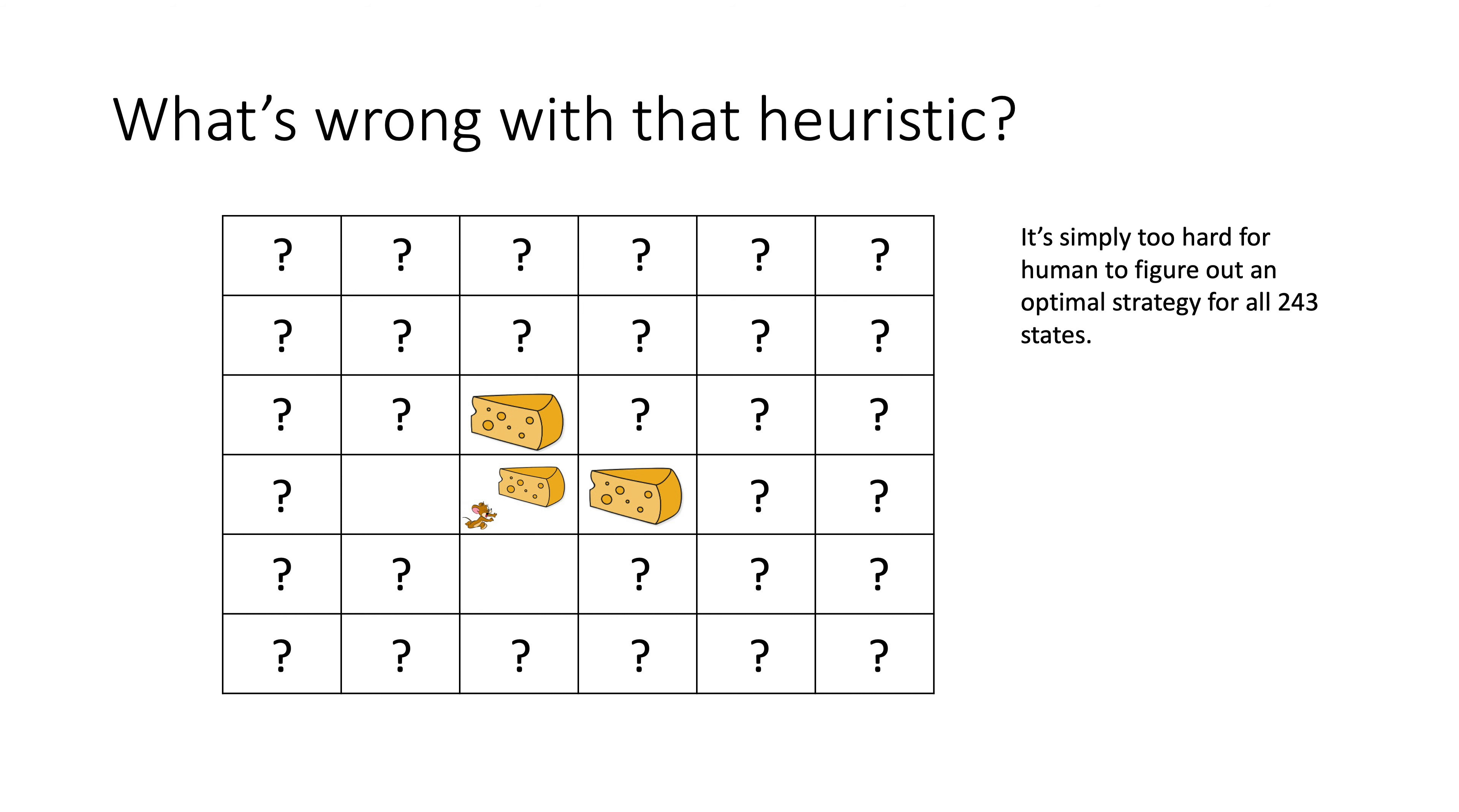You may ask me, what's wrong with our simple heuristic? Isn't it good enough? Well, here is an interesting scenario. There are pieces of cheese in Jerry's current cell, the above cell and the cell to the right. Here is a question for you. What action should Jerry take to guarantee that he will eat all the three pieces of cheese? Feel free to pause here and think about it for a minute.